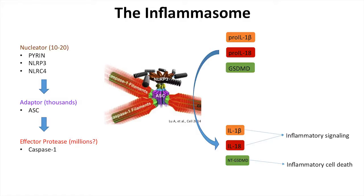For those who don't sort of live, breathe, and eat the inflammasome — I think of the inflammasome as basically having three subunits. There's a nucleator, a small number of molecules, 10 to 20, that can kick this all off. This is where the goodness or badness, depending on your perspective, begins. The nucleators I'm going to discuss are pyrin, NLRP3, and NLRC4, with NLRP3 pictured here.